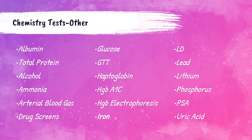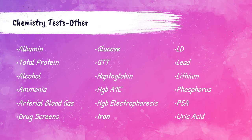Hemoglobin electrophoresis measures the different types of hemoglobin in the blood. Iron testing detects iron deficiency anemia. Lactate dehydrogenase (LD) — increased levels may indicate a heart attack or lung or liver disorders. Lead levels can be detected if a patient has lead poisoning. Lithium testing is performed for this psychoactive drug. Phosphorus is associated with skeletal or endocrine disorders. Prostate-specific antigen (PSA) can help detect prostate cancer. Uric acid — increases may indicate kidney disorder or gout, which is a type of inflammatory painful arthritis.